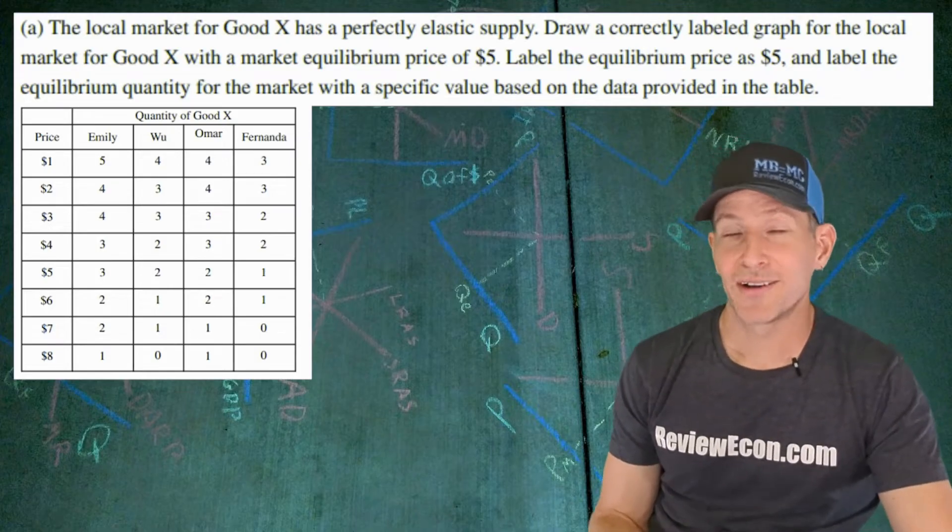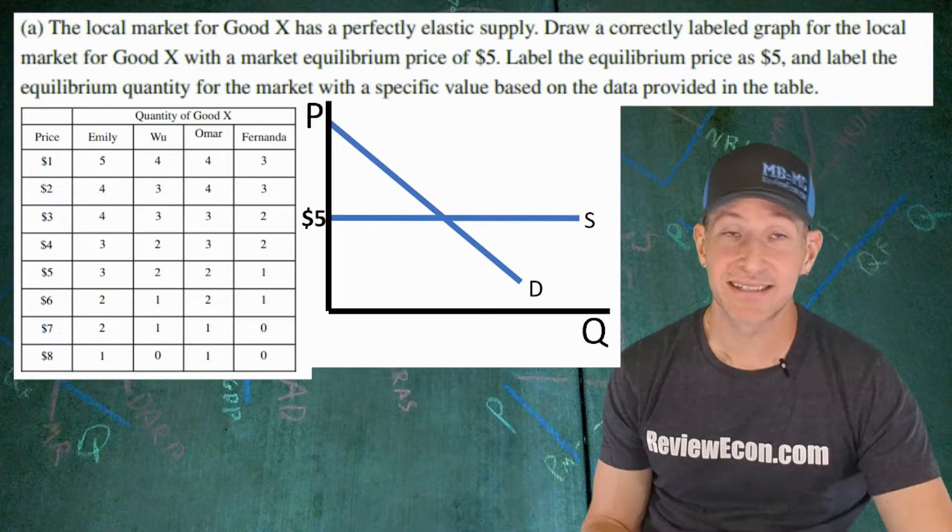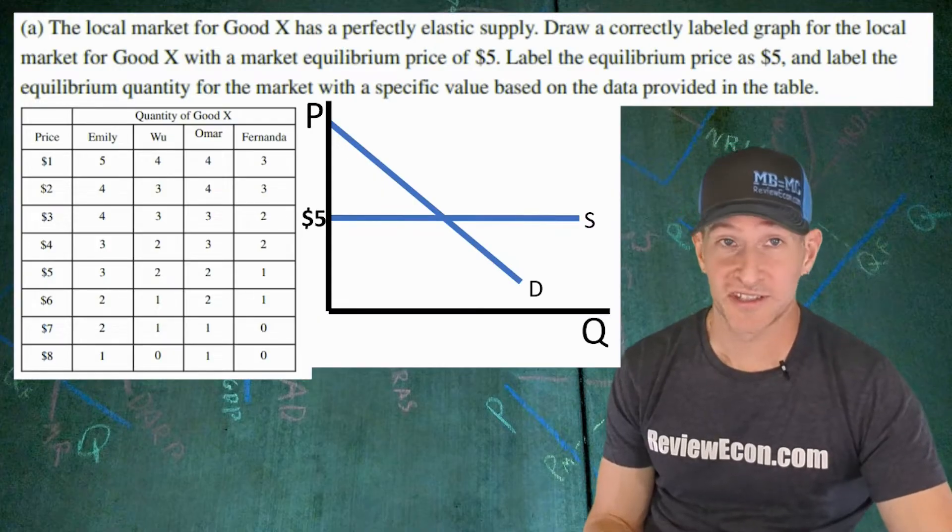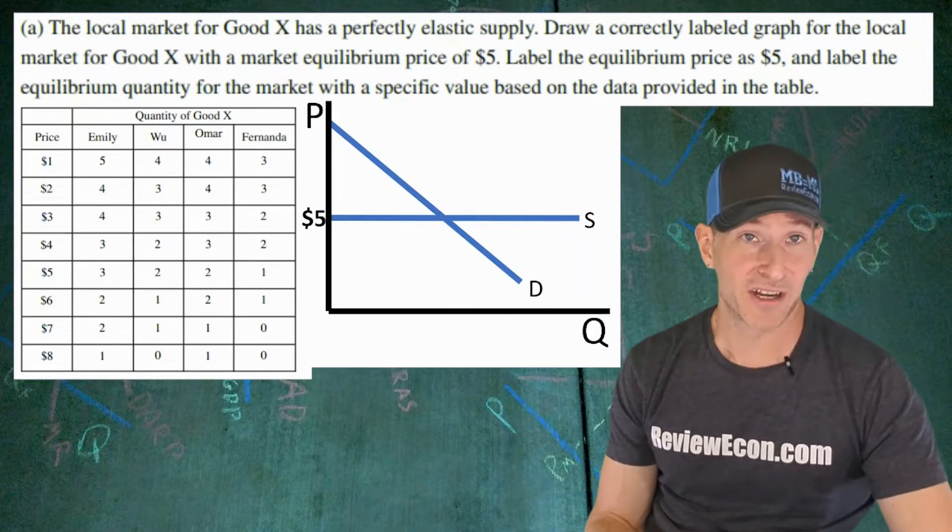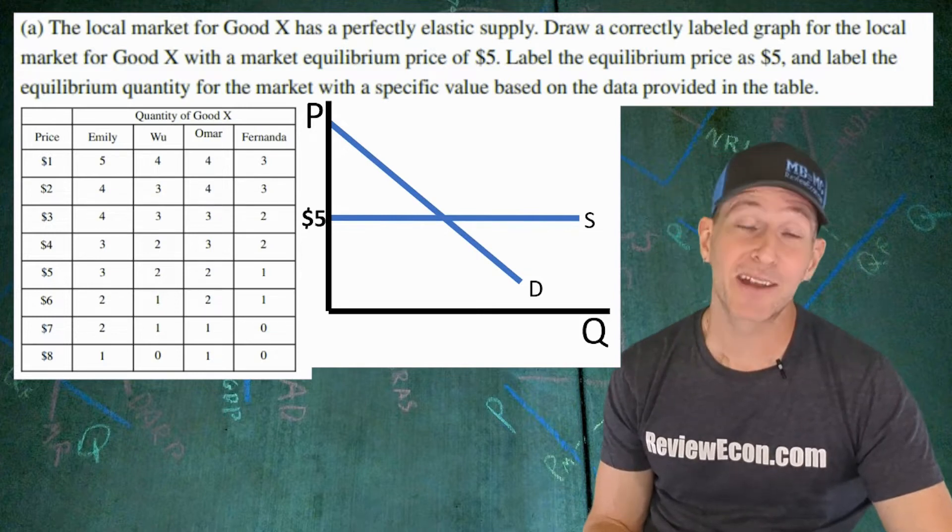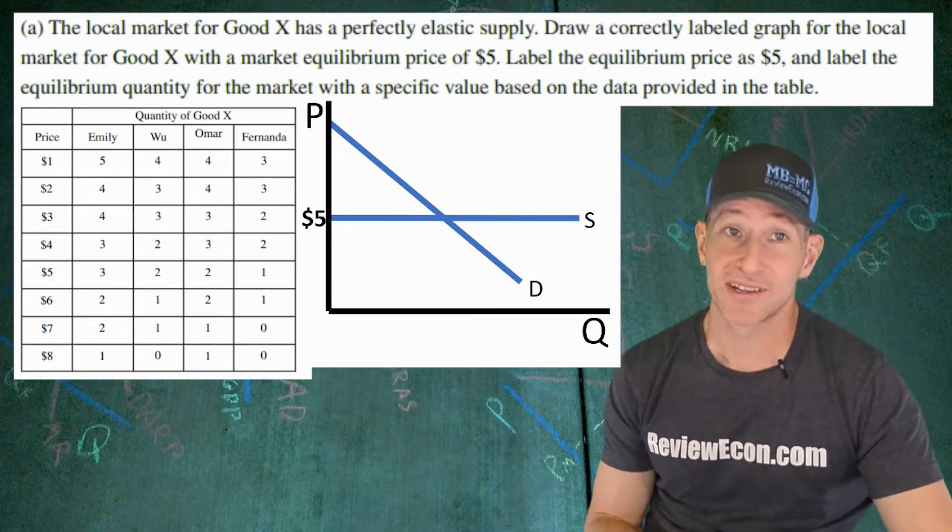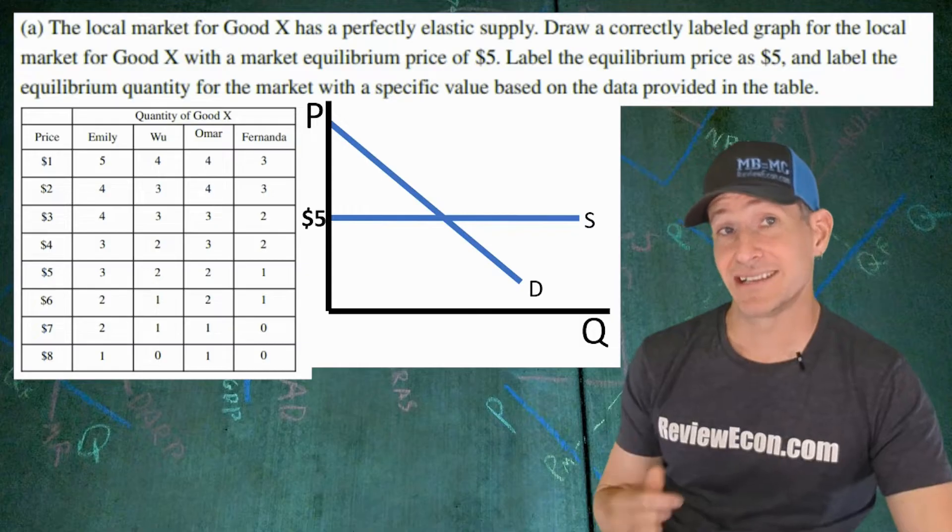We have to make sure we label that equilibrium price as $5 and identify the equilibrium quantity as well. Let's go ahead and draw out the price and quantity axis, along with the horizontal supply curve since it's perfectly elastic. The demand curve is going to be downward sloping, and we have our equilibrium price marked as $5. That's what you're going to need to get your first point.